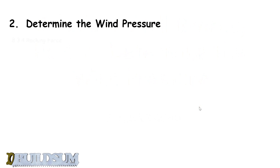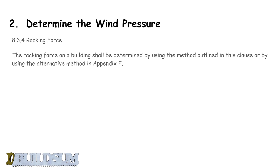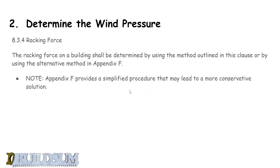Paragraph 8.3.4 racking force says that the racking force of a building shall be determined by using the method outlined in this clause, or by using the alternative method in Appendix F. The alternative method is a simplified procedure and it's going to give you a more conservative or safer solution, so it's going to require more bracing. We're going to go with the more economical method, which would be this one here.